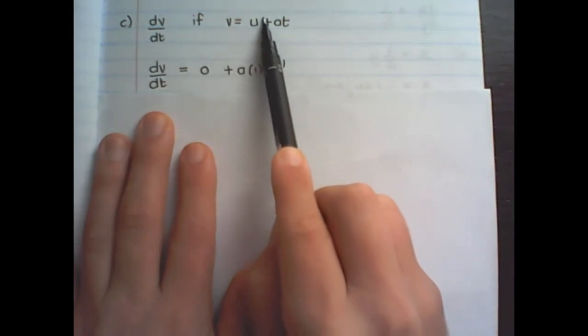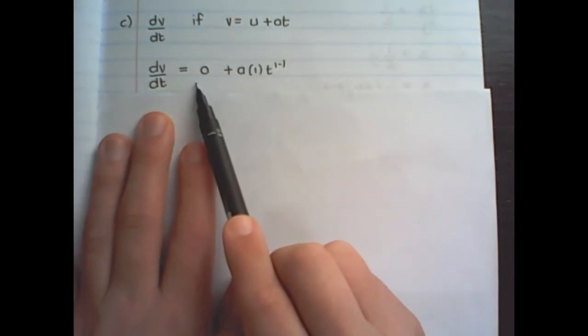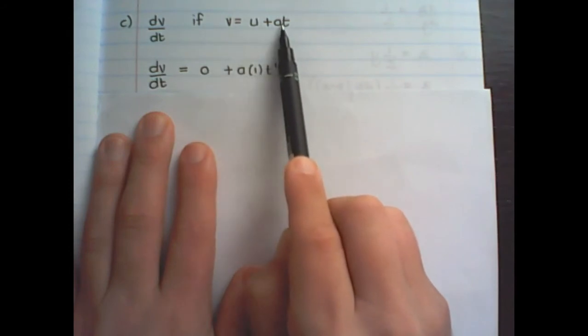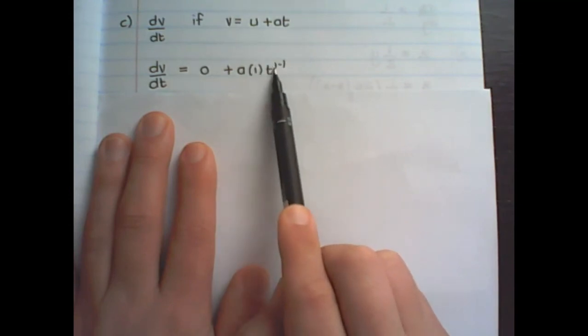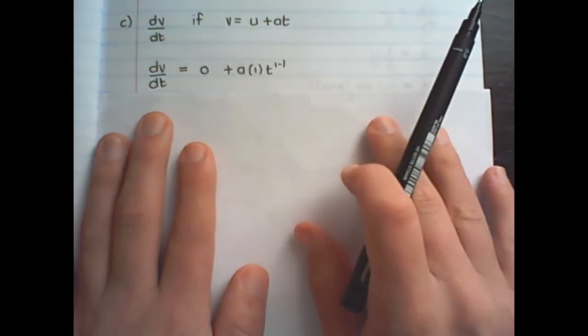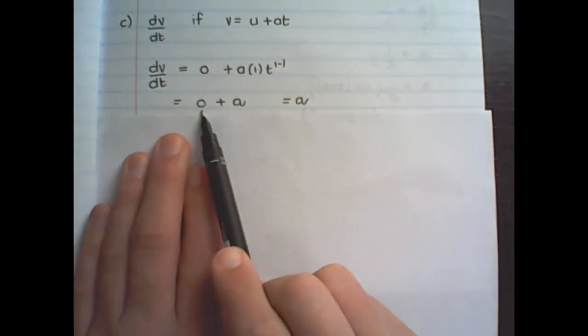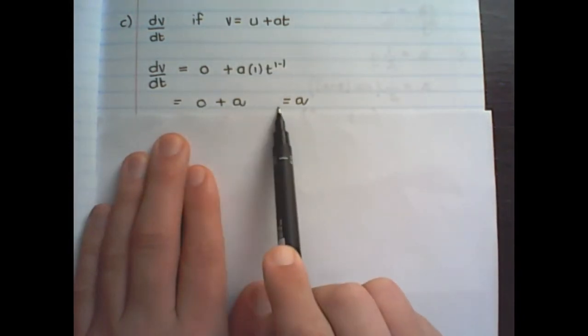We see that there is no t next to the u so it will become 0. We have a times t so it's a times 1. The exponent of t is 1 and we subtract 1 from the exponent. Therefore the derivative is 0 plus a or only a.